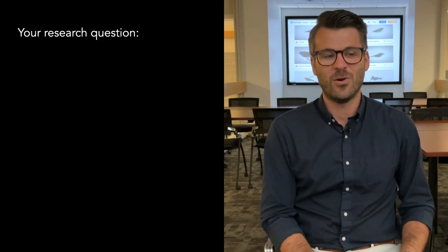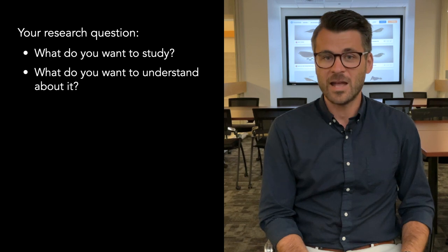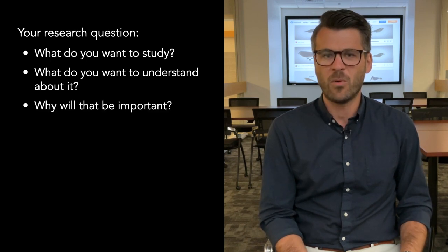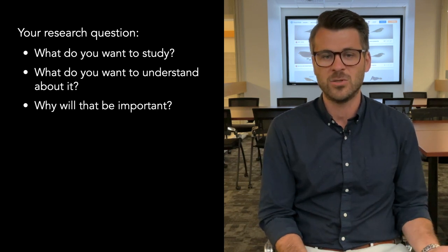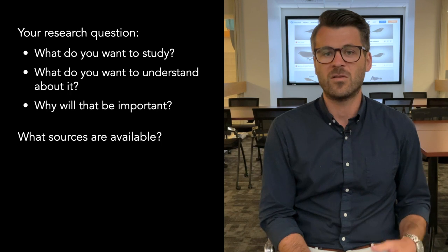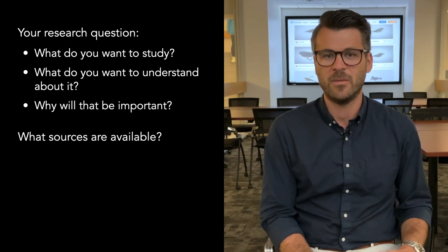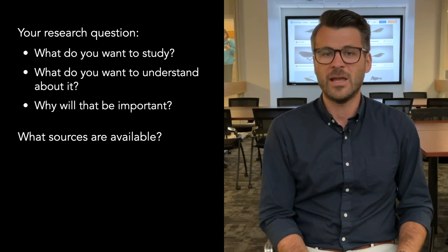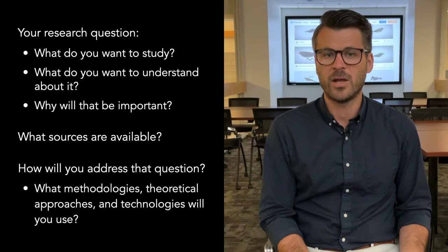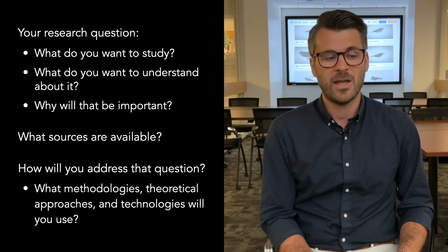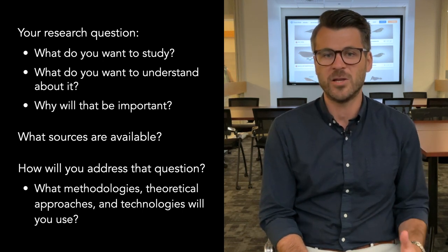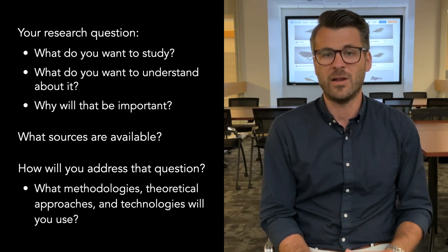There are three main areas you're going to want to consider when planning a digital project. The first, and perhaps most obviously, is your research question — what do you want to study, what do you want to understand, and why will that be important for both other scholars and possibly even the public at large. The second is what sources are available to address that question. And third is how you will address that question — what methodologies and theoretical approaches you'll employ, and what sorts of technologies you'll be using and what access you have to those technologies as part of the Boston College system.